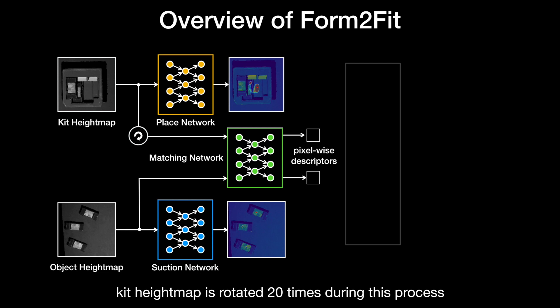Each pixel in the kit height map maps to 20 kit descriptors, one for each rotation, but only one of them, the most similar, will match to its corresponding object descriptor.